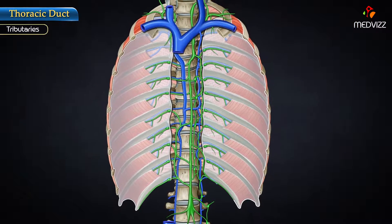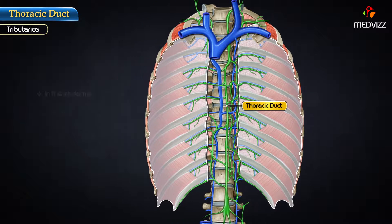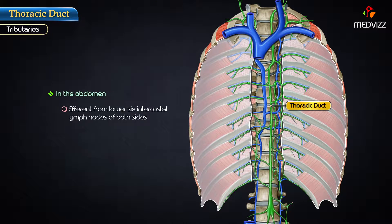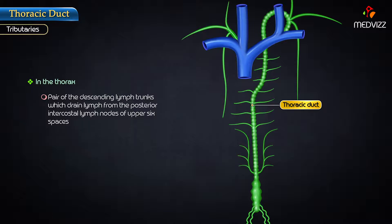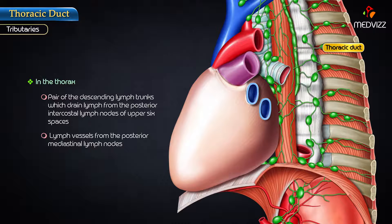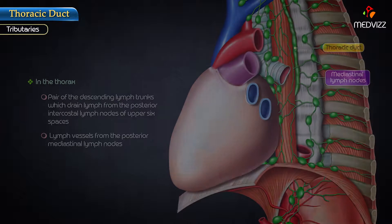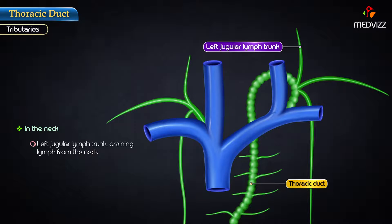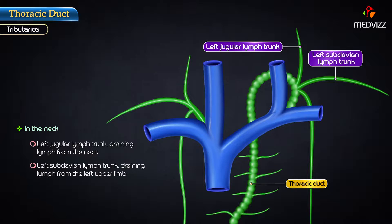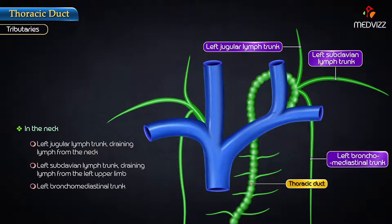Tributaries. The tributaries of the thoracic duct are as follows. In the abdomen: efferents from the lower six intercostal lymph nodes of both sides. In the thorax: a pair of descending lymph trunks which drain lymph from the posterior intercostal lymph nodes of the upper six spaces, and lymph vessels from the posterior mediastinal lymph nodes. In the neck: the left jugular lymph trunk draining lymph from the neck, the left subclavian lymph trunk draining lymph from the left upper limb, and the left bronchomediastinal trunk.